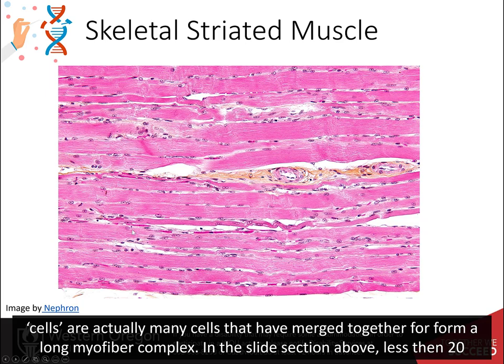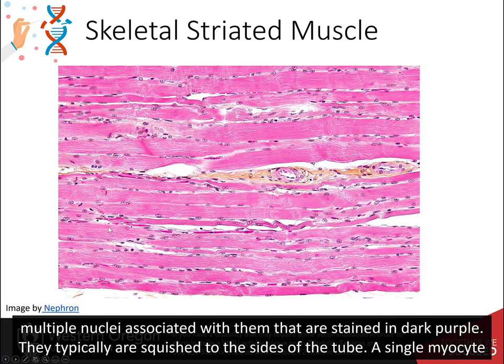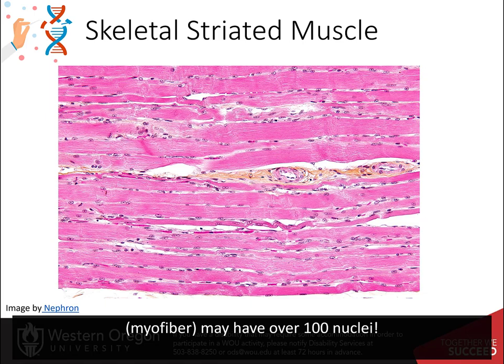In the slide section shown, less than 20 myocytes are shown, and none of them are complete cells — they continue off the slide section in both directions. They have multiple nuclei associated with them, stained in dark purple, typically squished to the sides of the tube. A single myocyte or myofiber may have over 100 nuclei.